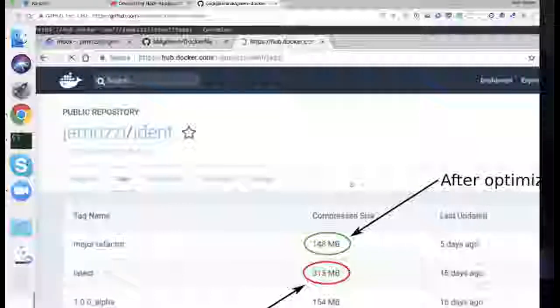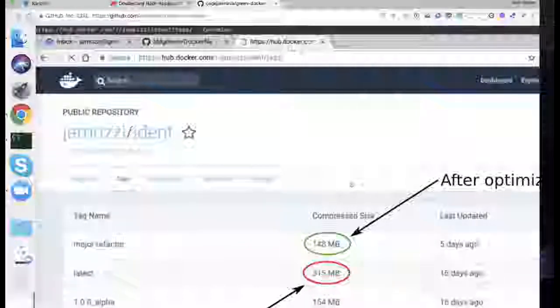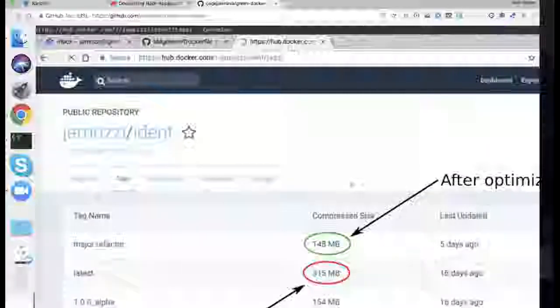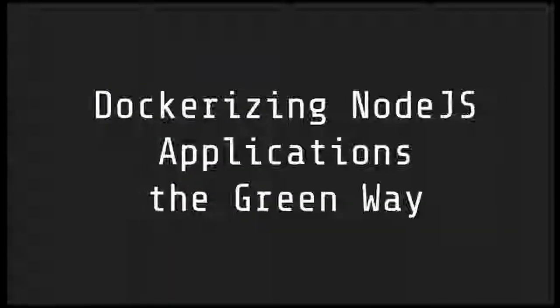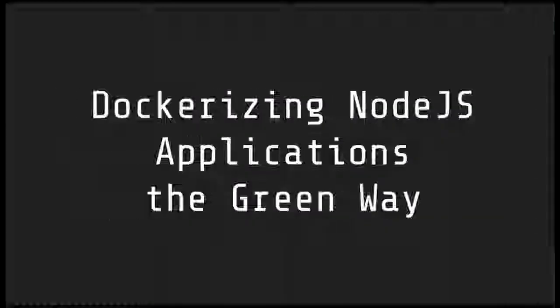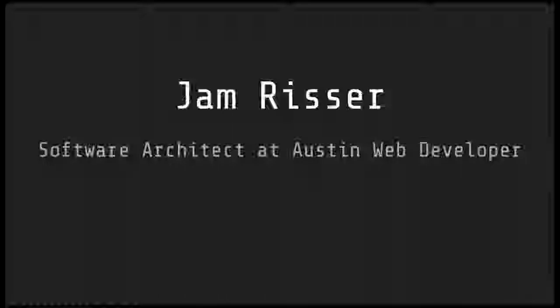A lot of this also comes from personal information I got when I sat down with the creator of Docker — he's the one who introduced me to Docker two years ago. I am Jam Rooster and I'm a software architect at Austin Web Developer. I started out a few years ago working at some startups downtown, working with the Sails.js platform, then went and worked for General Motors.